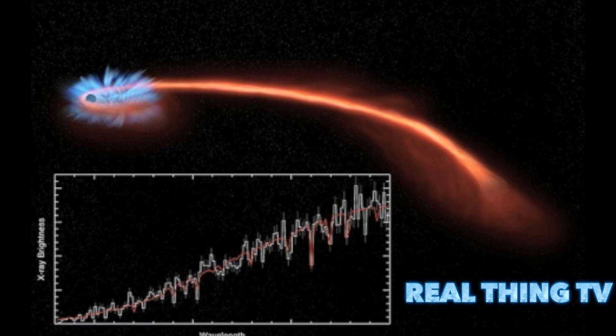Astronomers have spotted a black hole in the process of pulverizing a star 290 million light-years away. The phenomenon occurs when a star comes too close to a black hole, and the intense gravity of the black hole causes tidal forces that can rip the star apart.